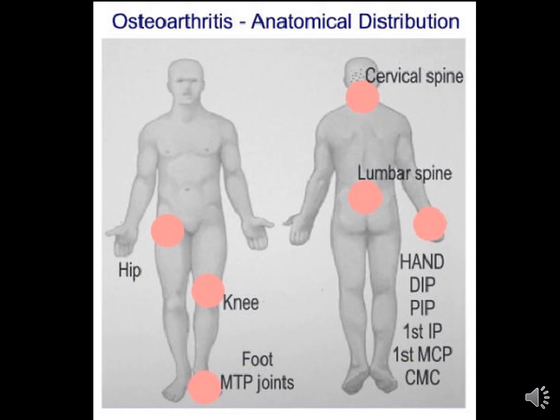The distal interphalangeal joints are affected by Osteoarthritis, unlike in rheumatoid arthritis where they are typically spared. This is a big difference when evaluating pain and swelling in the hand — whether it is related to Osteoarthritis or rheumatoid arthritis — as many patients may be misdiagnosed as having rheumatoid arthritis. Other affected joints include knees, foot metatarsophalangeal joints, and hip joints.